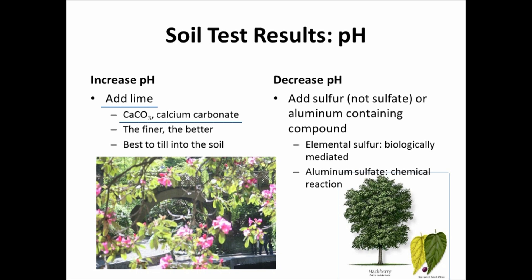Lime is sold in a bunch of different grades. The finer the material — the smaller the particle size — the faster it's going to react. Lime is relatively immobile, which means if we broadcast it onto the surface, it's going to take a long time for that material to move down deep into the profile. So it's best if we can till that lime into the root zone and incorporate it throughout, rather than waiting for it to happen naturally.